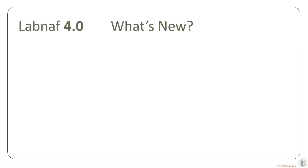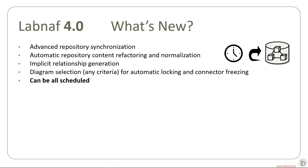We are already reaching the end of our presentation. Now let's see what's new in LabNorv 4. In architecture we often need to exchange information with the rest of the organization — like IT, finance — or with a CMDB. With LabNorv 4 you can address advanced synchronization scenarios. You can also automatically normalize your repository content — the structure, the location of elements in packages — and you can also generate implicit relationships. Diagrams can be automatically selected and protected against connected changes or other types of change. All these features can of course be scheduled as you wish.